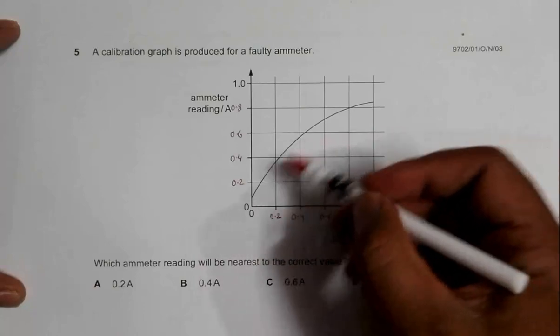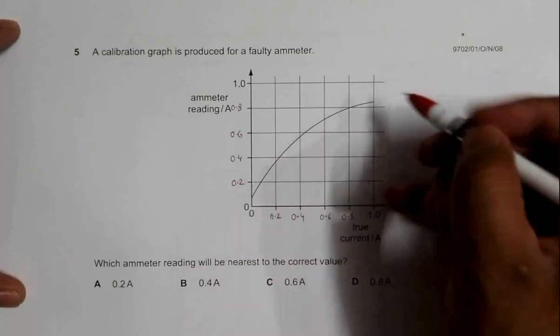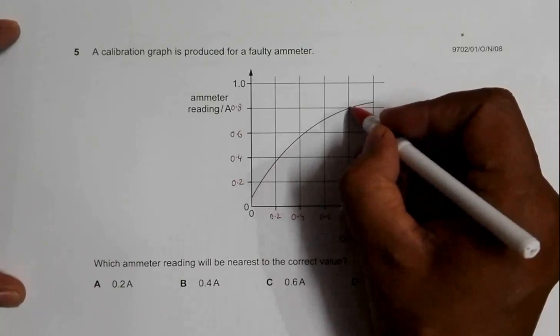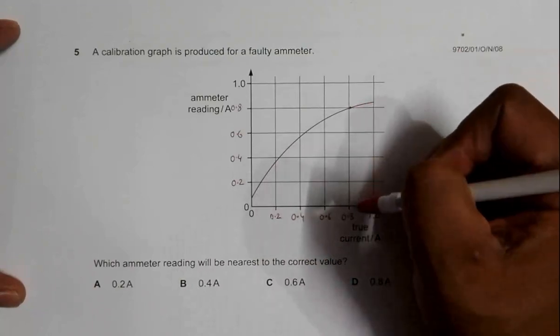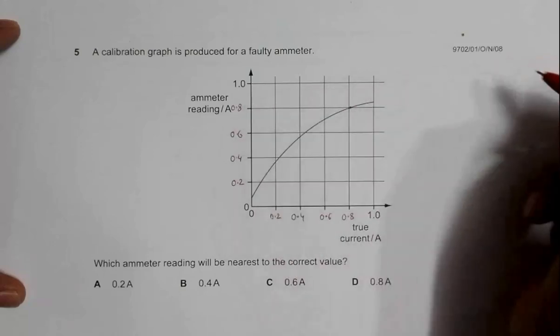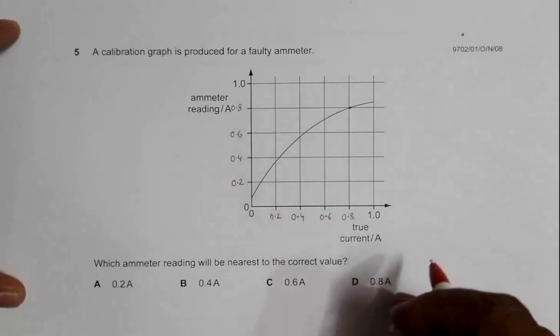If you go through the graph like this, at this very point, the true current is 0.8 ampere and the ammeter reading is also 0.8 ampere. So this seems to be the correct choice.